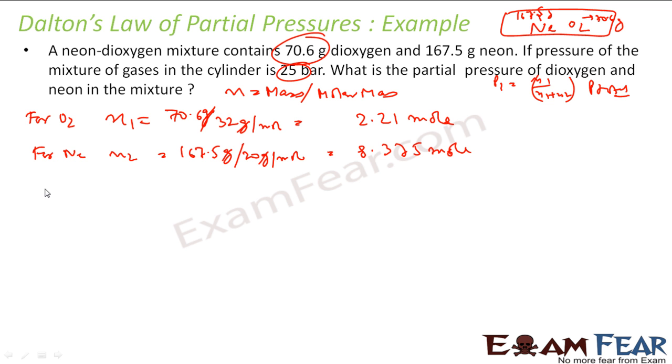So now finding partial pressure by oxygen, that will be very easy. That will be n1 by n1 plus n2 into total pressure. That will be 2.21 by 2.21 plus 8.375 into total pressure, that is 25 bar. So if you solve this, you get 5.25 bar.